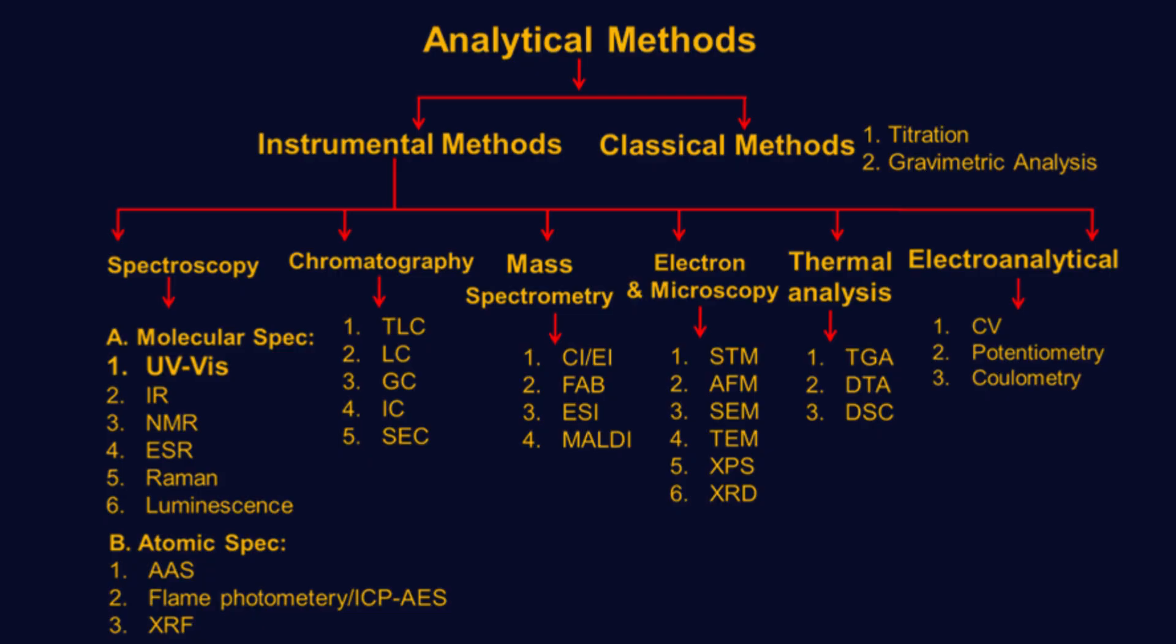Mass spectrometry methods such as chemical ionization CI, fast atom bombardment FAB, electrospray ionization ESI, and matrix-assisted laser desorption ionization MALDI are used to identify molecular masses and structures.